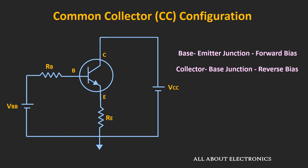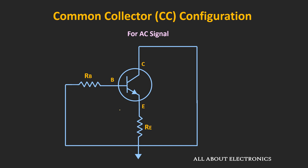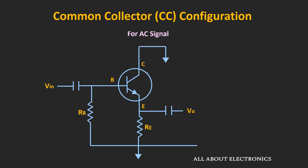Here, the resistor is connected on the emitter side. During AC analysis, all the DC voltage sources are considered as zero, which means the collector terminal gets grounded. When we apply the AC signal at the base terminal and measure the output at the emitter terminal, the input is applied between the base and collector, and the output is measured between the emitter and the collector terminal.